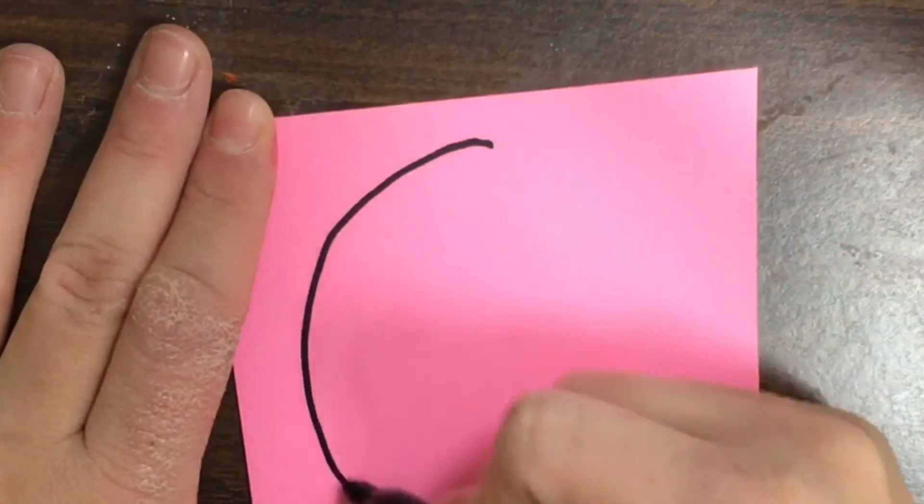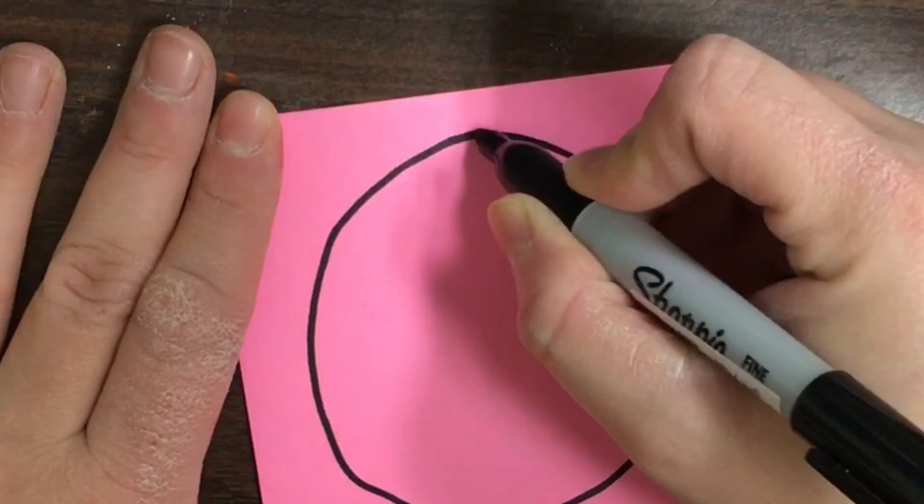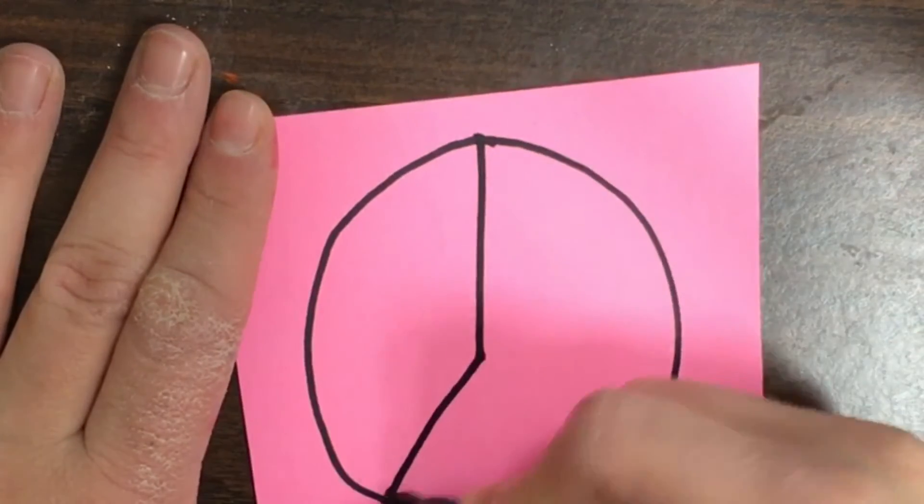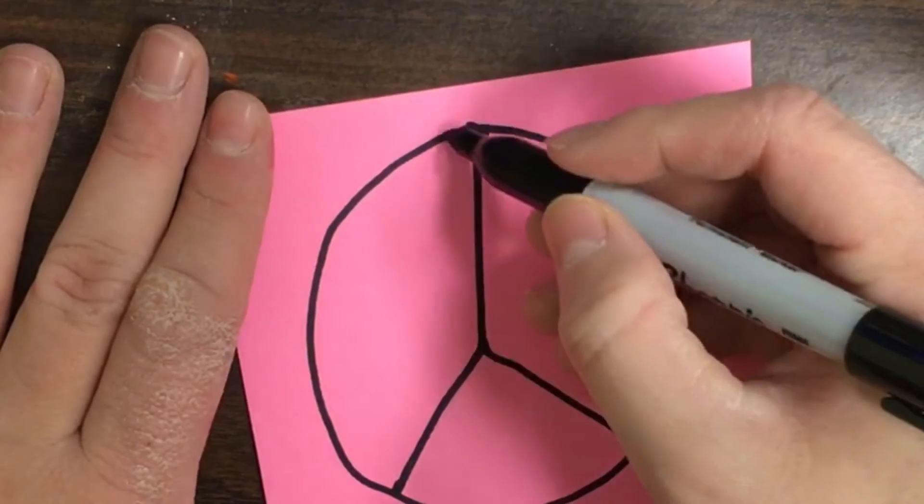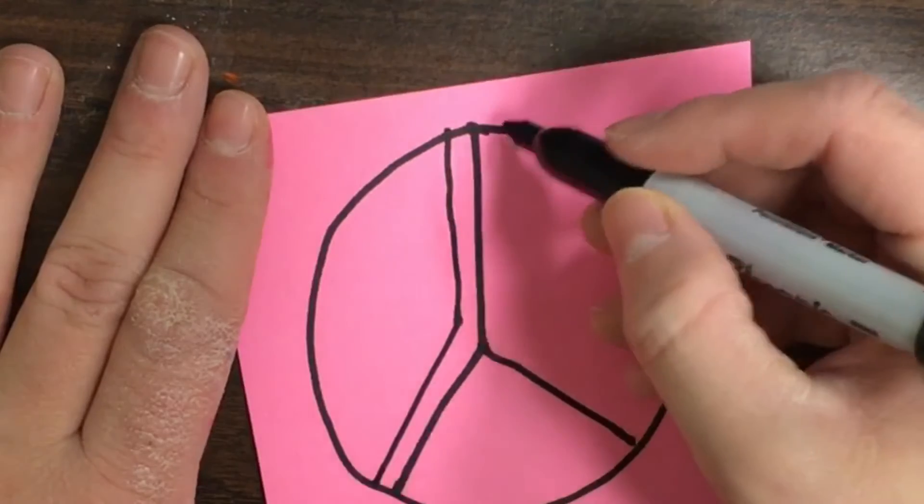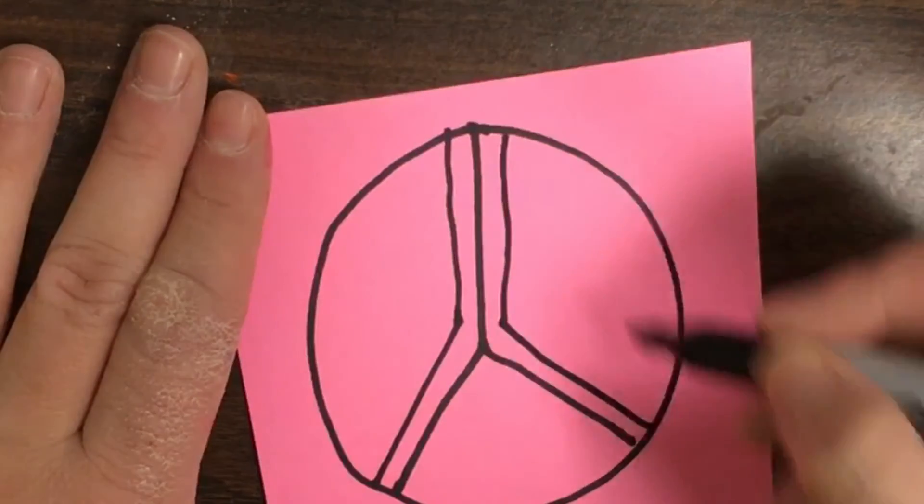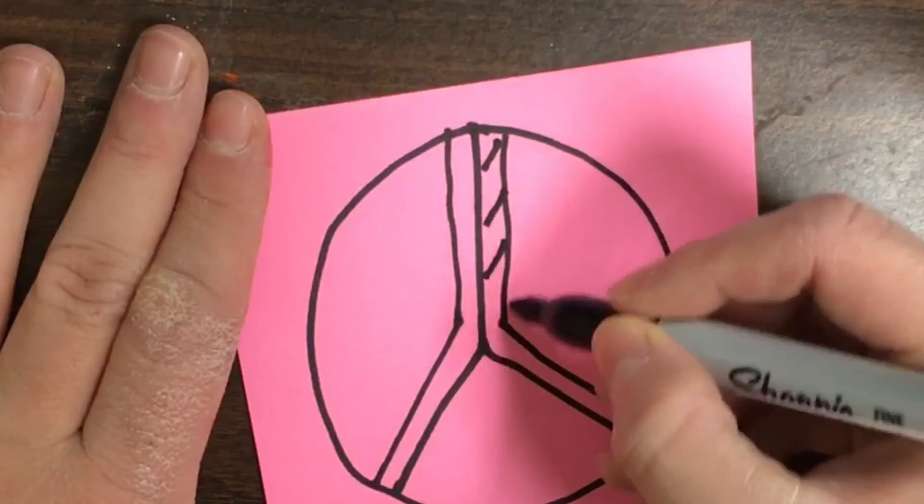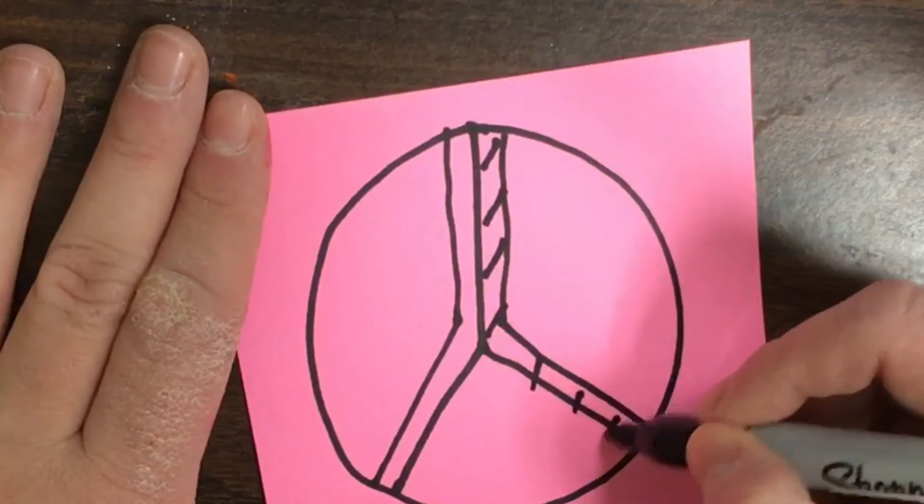So the first one I'm going to do is I'm just going to think of the peace sign. So I'm going to draw a circle. And then maybe I want to do some details and patterns. That's okay, as long as I keep it kind of simple.